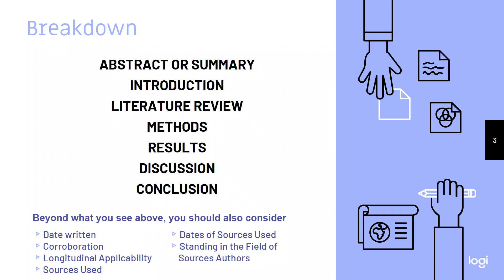So the breakdown of most academic articles - I'm not talking about the ones that talk about literature, I'm talking about the ones that talk about studies - start with an abstract or summary, then you'll have an introduction, a literature review, methods, results, discussions, and conclusions. This could look different. There might be only four of these or five of these, but for the most part, this is what you're going to see.